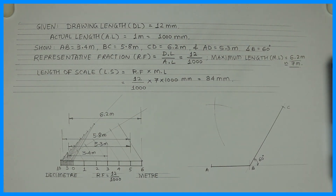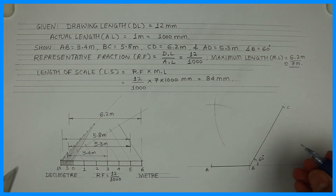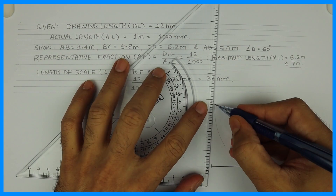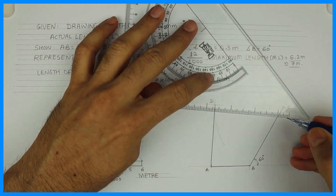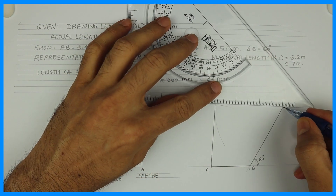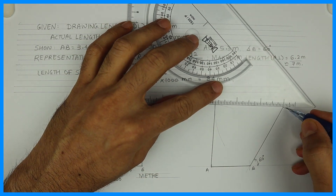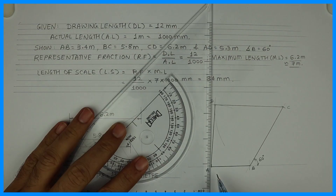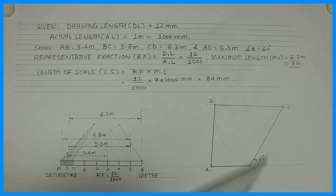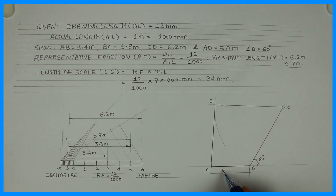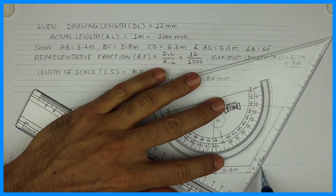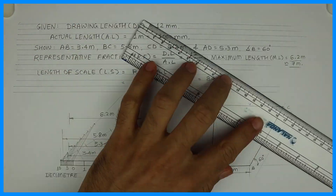Remember: angle B I have taken anti-clockwise, but you can draw it clockwise also. Then you can show all the dimensions on the quadrilateral. Thank you.